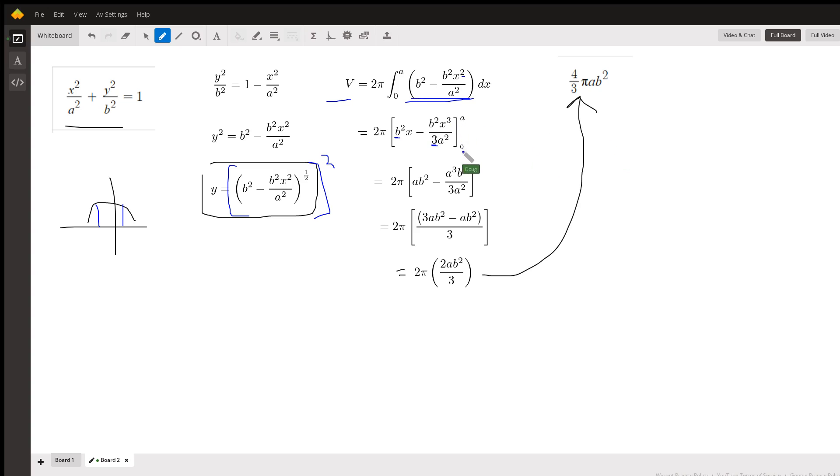And now I want to evaluate that from zero to a. So I'll put a in for x, that gives me a b squared for the first term. Put a in for x in the second term, and I get a cubed b squared over three a squared. Of course, I'll subtract put zero in for x, but I'll just get a zero.